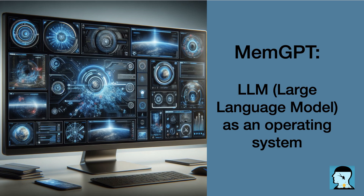Virtual context management in MEMGPT refers to the way the model handles and organizes different types of information in its memory. It involves the use of three main components: system instructions, conversational context, and working context.